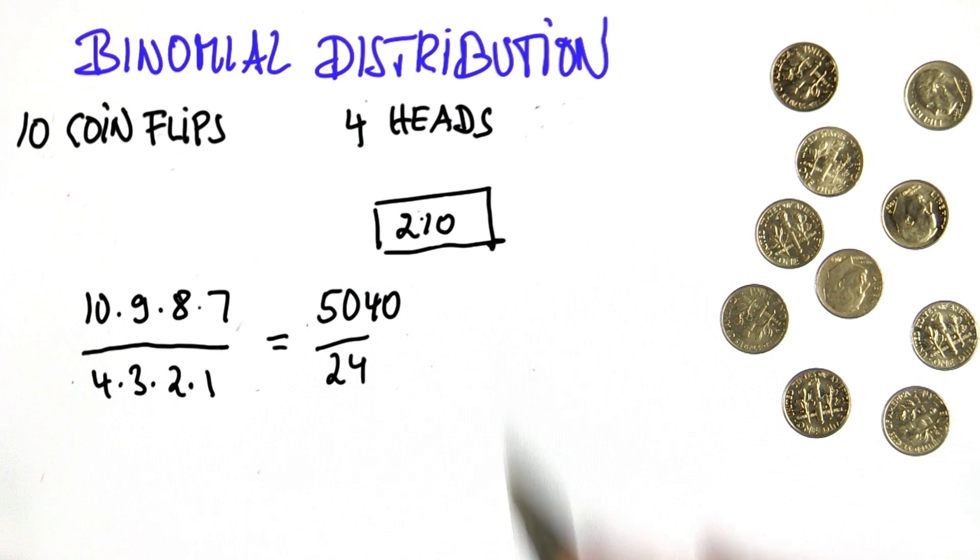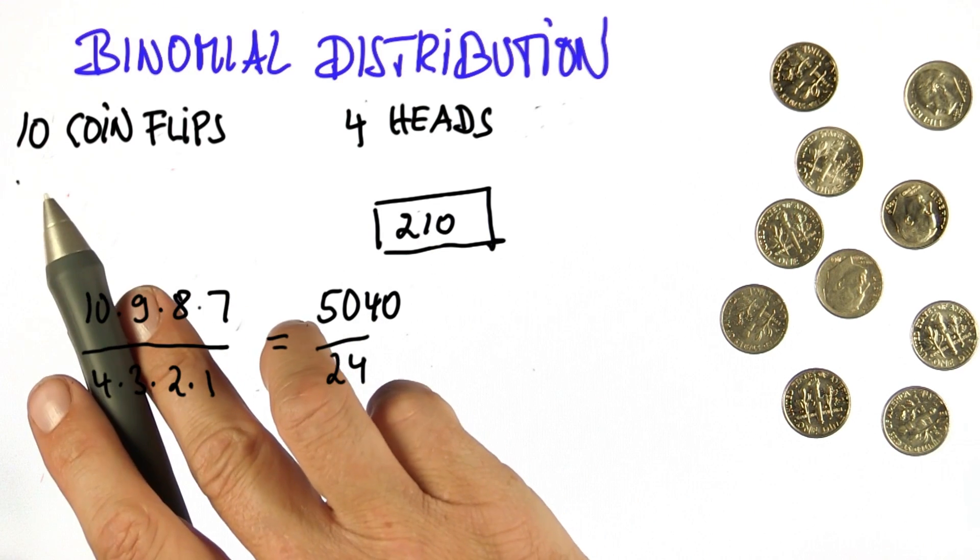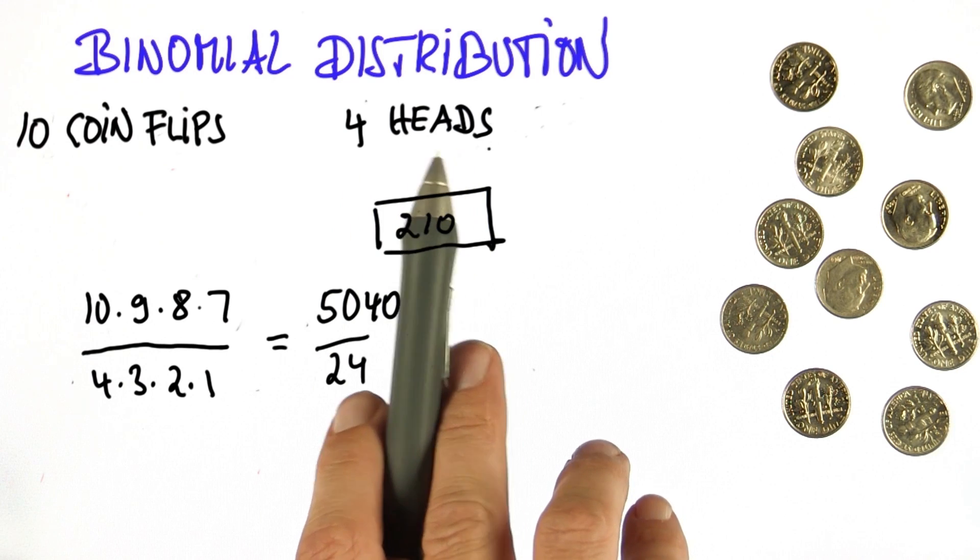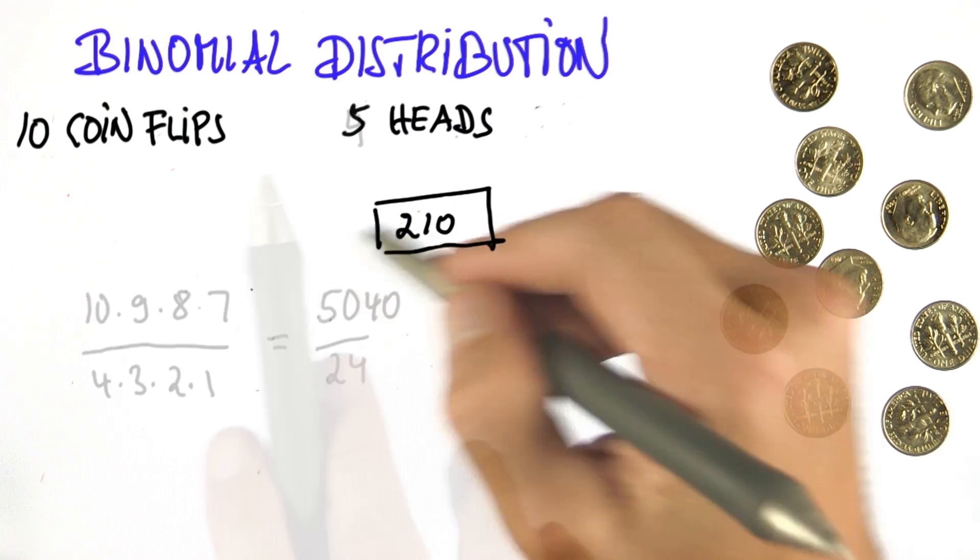So there's 210 outcomes out of 2 to the 10th outcomes, which is 1,024, in which exactly 4 heads are observed and 5 tails. Now it's your turn.